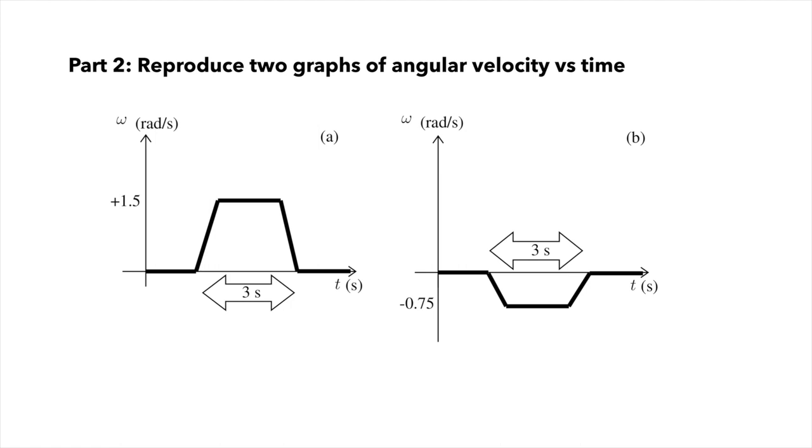In part two, you will reproduce two graphs of angular velocity versus time that are given in your lab manual. Here, we're trying to approximate the general shape, magnitude, and duration of the rotation. Try to reproduce these two graphs as you see them here. We are not looking for exact reproductions of these graphs, just rough representation of the amplitude and duration of the rotation.